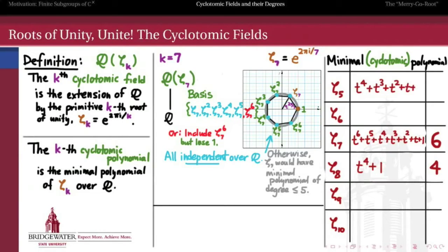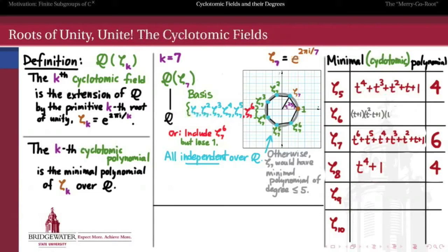Let's quickly take a survey of some other examples. The 5th root of unity has a minimal polynomial of t to the 4th plus t cubed plus t squared plus t plus 1, so the 5th cyclotomic field is a degree 4 extension of the rationals — just like the 8th was. The 6th primitive root of unity has as its minimal polynomial not t to the 6th minus 1 (not irreducible), and not the products from the sum or difference of cubes factorization. After factoring fully into four irreducible pieces, it turns out to be the second factor, t squared minus t plus 1. So the 6th cyclotomic polynomial is just quadratic.